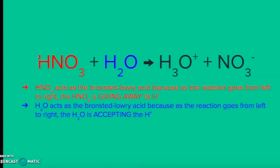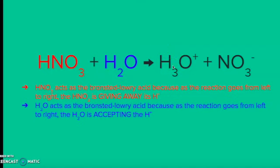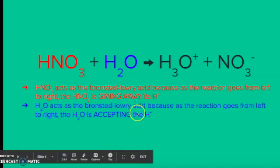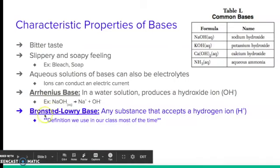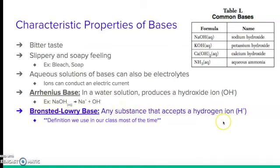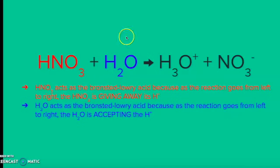Then if we look at water, H2O — going from H2O on the left to H3O+ on the product side — we notice that water gained a hydrogen ion; it went from having two to having three. So that is going to be a Bronsted-Lowry base. We know it's a base because it's accepting the hydrogen ion. That's how we know water is acting as a base in this situation.